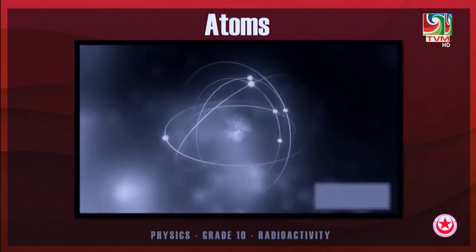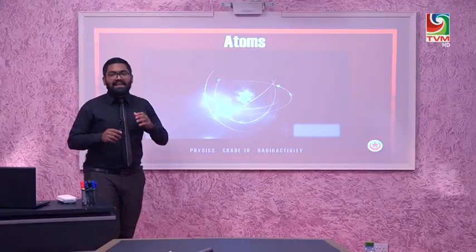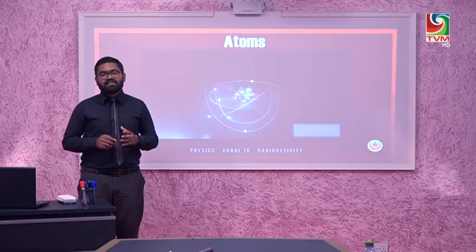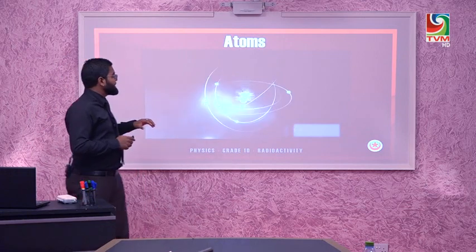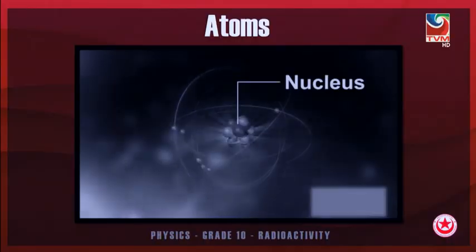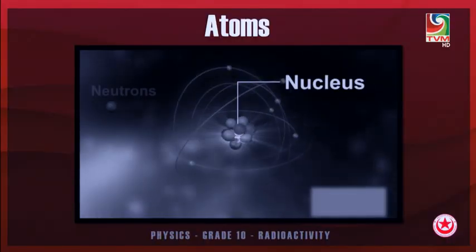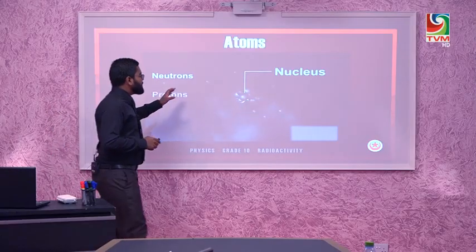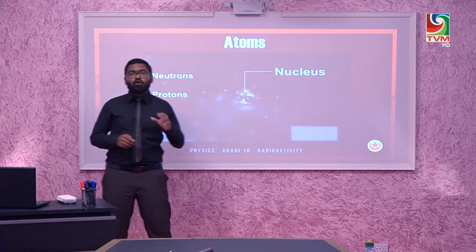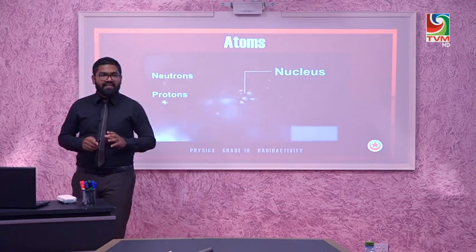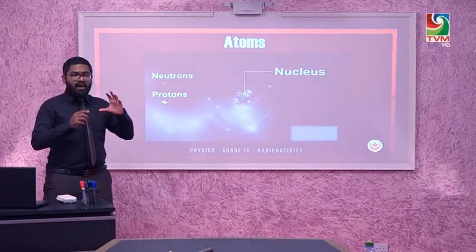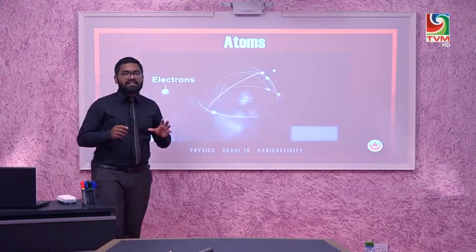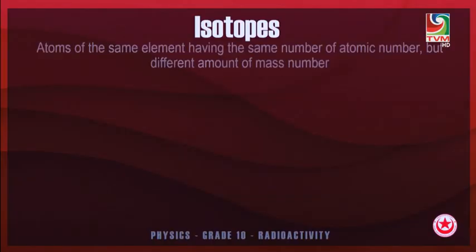First of all, let us recall what an atom is. You must have studied in chemistry that an atom consists of protons, neutrons, and electrons. Inside the nucleus we have the protons and neutrons, surrounded by electrons orbiting around the atom. In a normal atom, it is said to be electrically stable.